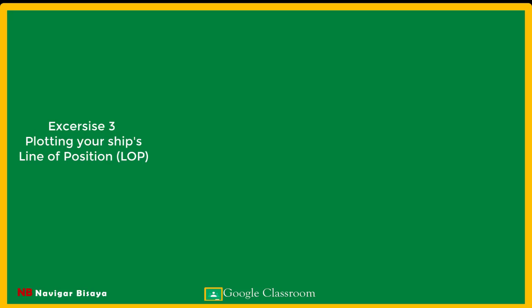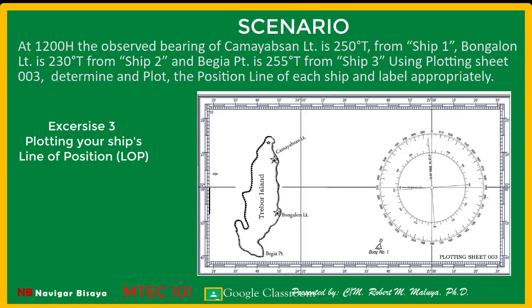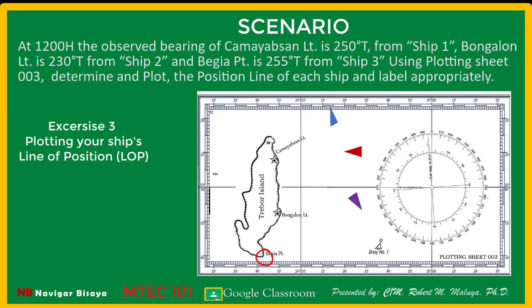Welcome back to MT-101 Module 2 Exercise 3. The scenario: at 1200, the observed bearing of Kameyam Sun light is 250 degrees true from Ship 1. Bungalun light is 230 degrees true from Ship 2, and Behia point is 255 degrees true from Ship 3. Using plotting sheet 003, determine and plot the position line of each ship and label it appropriately.